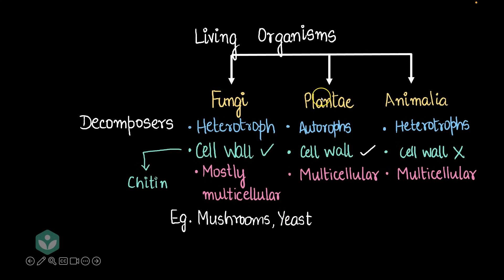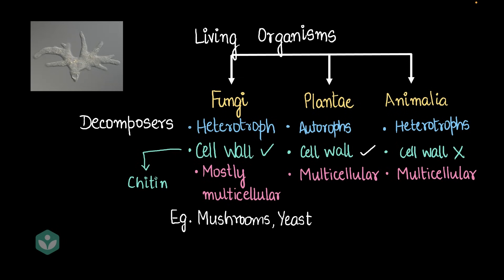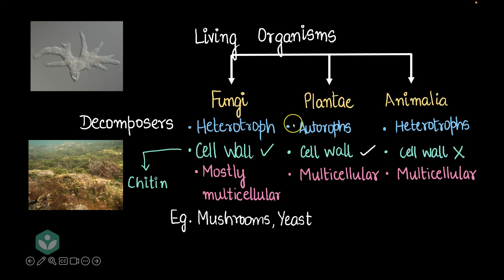So are these three categories sufficient? Can all living organisms fit into fungi, plantae, or animalia? Turns out, there are living organisms that don't fit. For example, amoeba — that small slimy unicellular organism that moves using pseudopodia — doesn't fit into fungi, plantae, or animalia. Amoeba aren't decomposers, they don't produce their own food, they are heterotrophs. But amoeba are unicellular, whereas all of animalia is multicellular. There's also algae, which makes its own food like plantae using photosynthesis, but is not always multicellular. So we're stuck with a few organisms that don't fit into these categories.